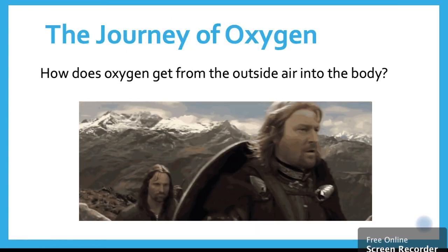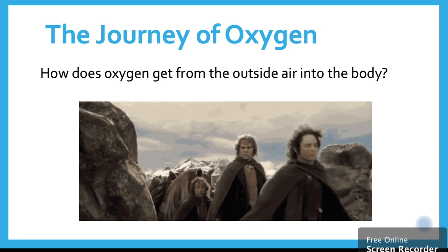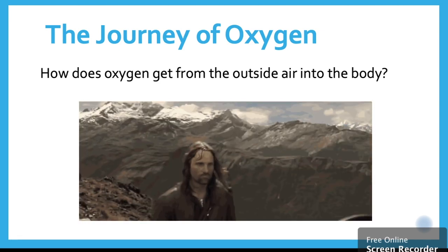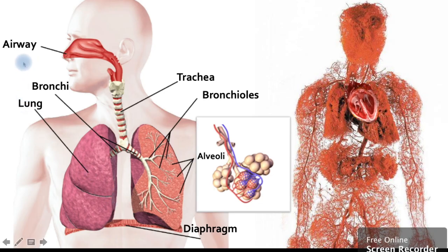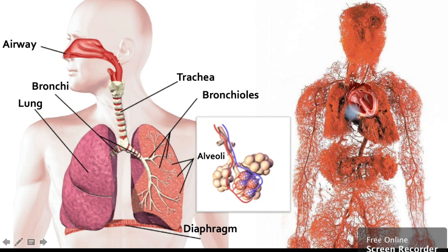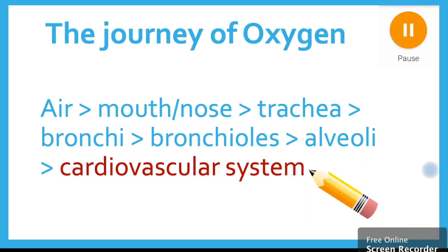We're going to have a look at the journey of oxygen — how exactly does oxygen get from the outside world into our body? Follow my mouse. This is the journey oxygen takes. It starts in the outside world, gets breathed in through our nose or mouth, comes down our trachea or windpipe, then splits off into our bronchi and bronchioles, and keeps going down to our alveoli where it is picked up by our blood vessels. This is where it goes from the respiratory system to the cardiovascular system, then gets sent to the heart and pumped around the body. Pause the video and write this down on your piece of paper.